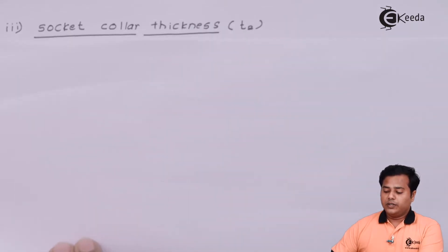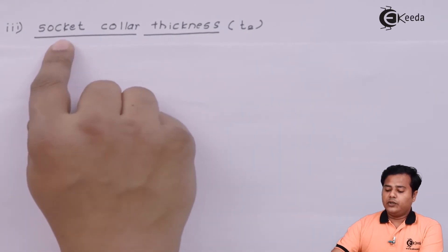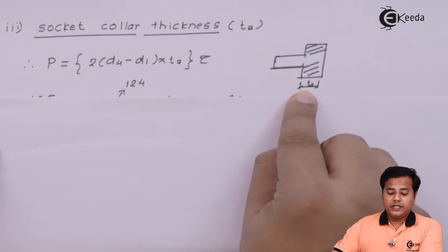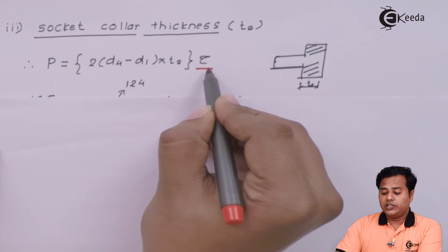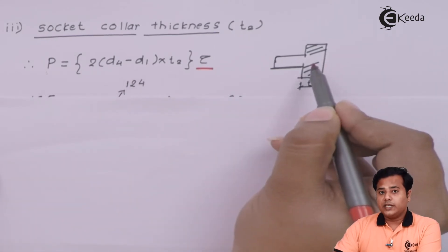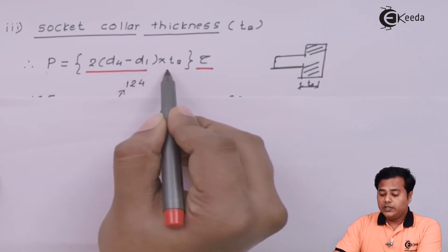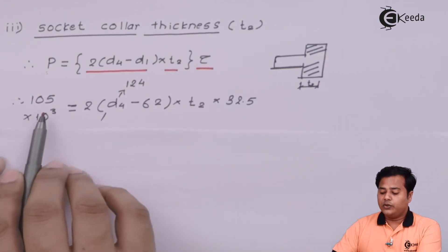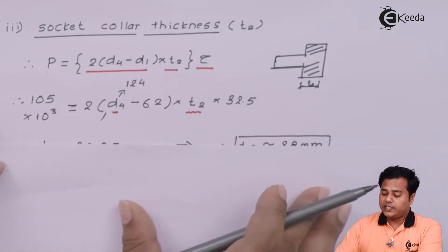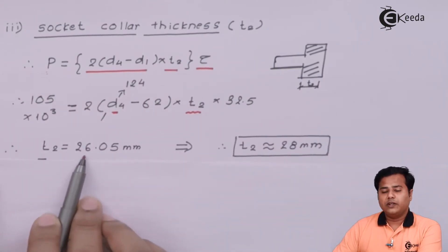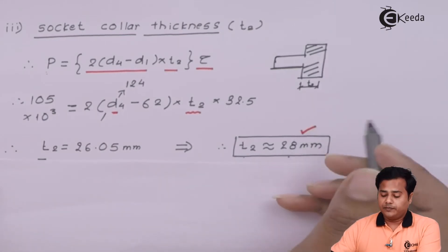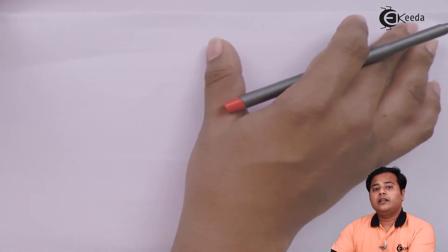Let us move ahead to the next parameter for the socket end, which is the socket collar thickness, named T2. The collar thickness fails under shear, so we apply the shear criteria using tau. The expression is: axial load equals twice the projected area — that is, circumference into thickness — multiplied by the shear strength. With the value of D4 already determined and all other values known, the only unknown is T2. Solving this expression gives T2 equals 26.05 mm, which we approximate to 28 mm. That is our third finding.